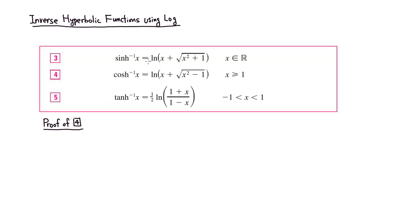Inverse hyperbolic sine of x is identical to natural log of x plus square root of x squared plus 1. The inverse hyperbolic cosine of x is equal to natural log of x plus square root of x squared minus 1. And the inverse hyperbolic tangent of x is identical to one-half times natural log of 1 plus x over 1 minus x.